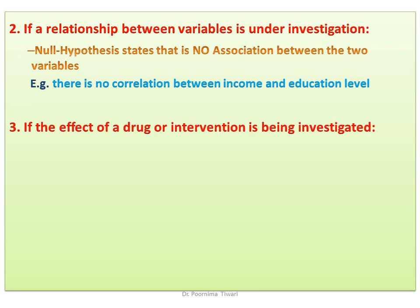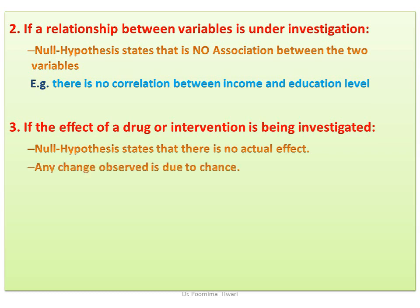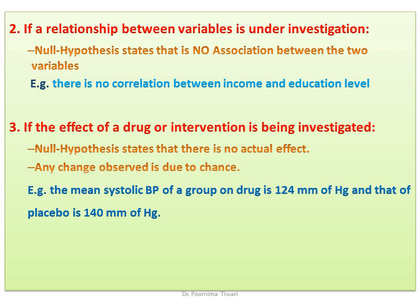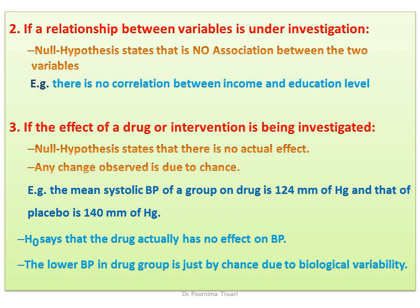If the research is about studying the effect of a drug or intervention on a disease, the null hypothesis states that there is no actual effect of the drug or intervention and any change that is observed is due to chance. For example, the systolic BP was found to be 124 mmHg in the drug group and 140 mmHg in the placebo group, but the null hypothesis says the drug had no effect — the lower BP in the drug group was just because of biological variability.